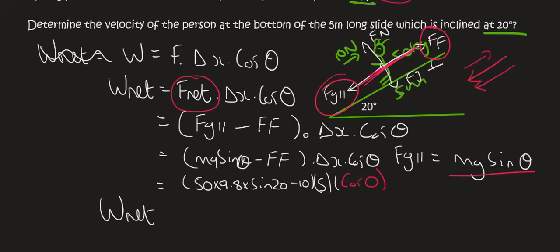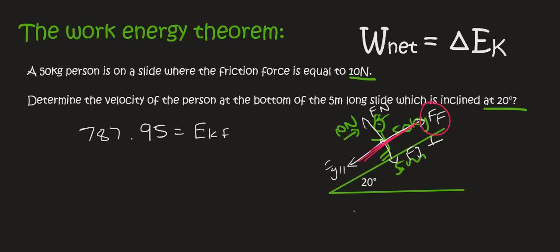And so if you go type all of that in on the calculator, you're going to realize that W net is equal to 787.95 joules. Now we know that W net is equal to change in EK, and change in EK is EK final minus EK initial.